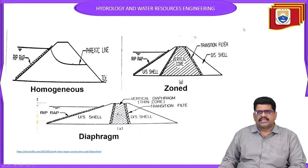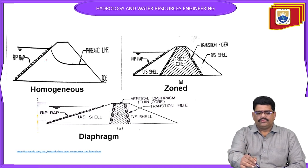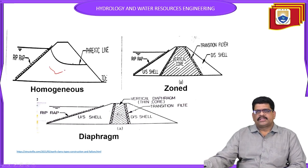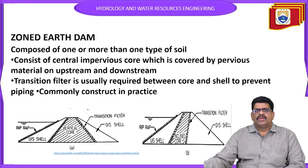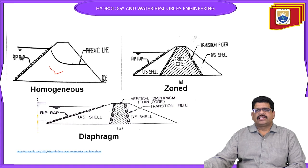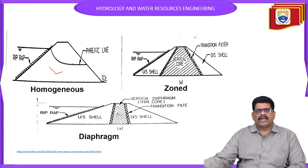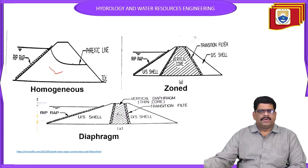A homogeneous earthen dam is one in which a single type of material is used for the construction of the dam. The preparation of this earthen dam uses a single type of impervious earthen material throughout — we call it a homogeneous earthen dam.